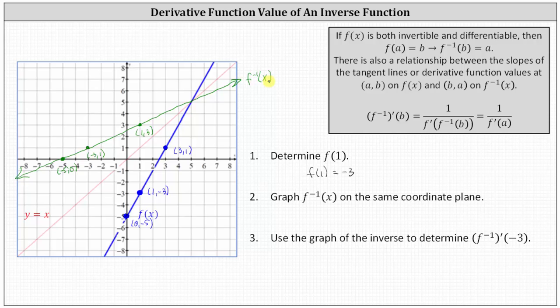Notice I also graphed the line y equals x on the coordinate plane. That's because whenever we graph a function and its inverse function on the same coordinate plane, they will be reflections across y equals x. Notice if we fold the blue line across the red line y equals x, it matches up perfectly with the green line, which is the graph of f inverse of x.